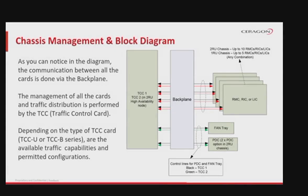The IP20N and IP20A indoor unit block diagram shows that communication between all cards is done via the backplane. The management of all cards and traffic distribution is performed by the traffic control card, TCC. Depending on the type of TCC card — TCCU or TCCB series — the available traffic capabilities and permitted configurations will vary.